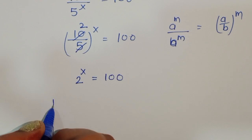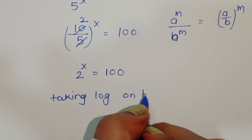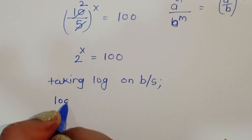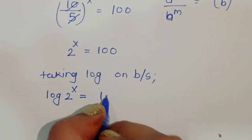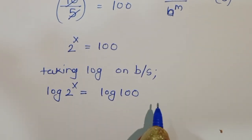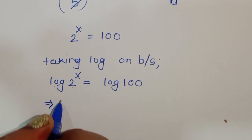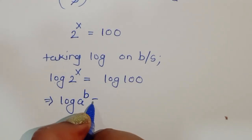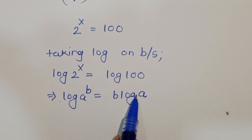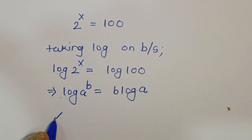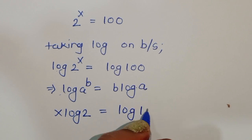We have to find the value of x, so we take log on both sides. Taking log on both sides, we get log of 2 power x equal to log of 100. Using the formula log of a power b equals b times log of a, we can write this as x log of 2 equal to log of 100.